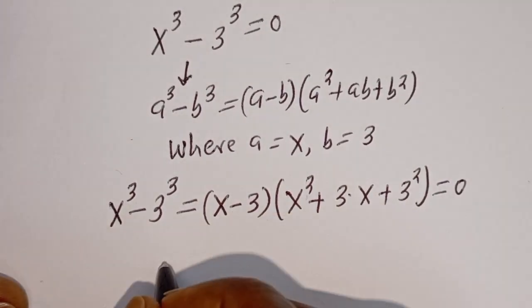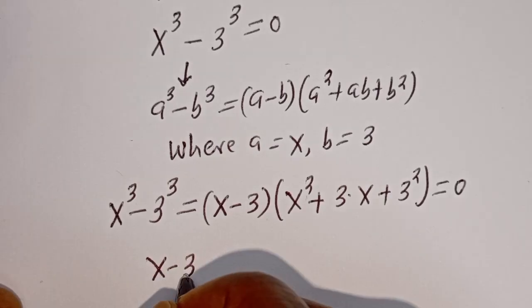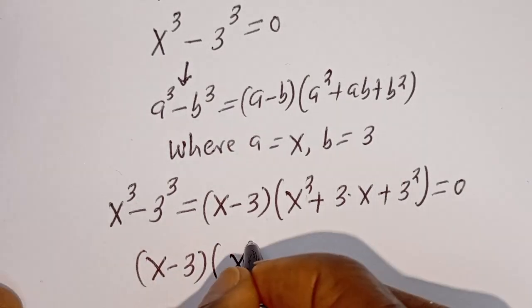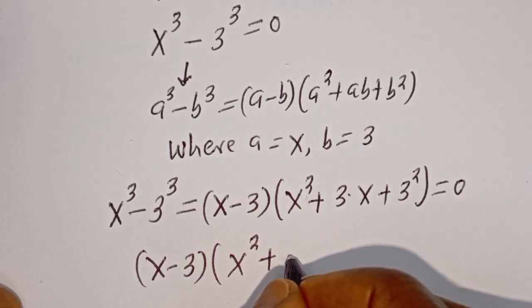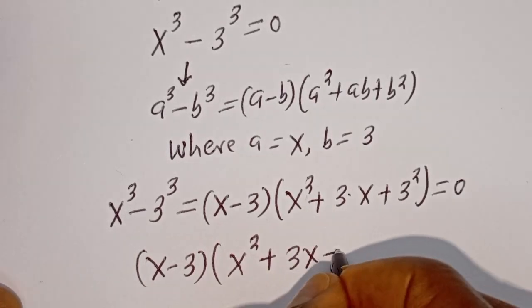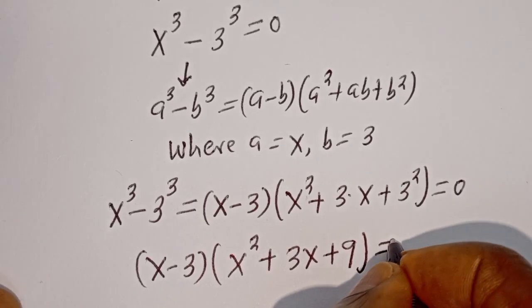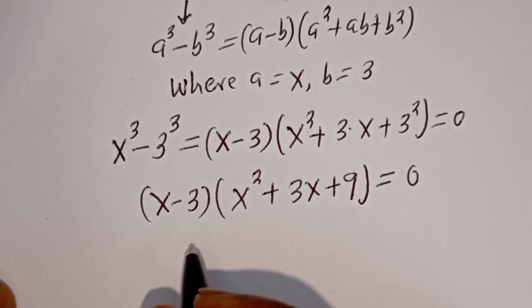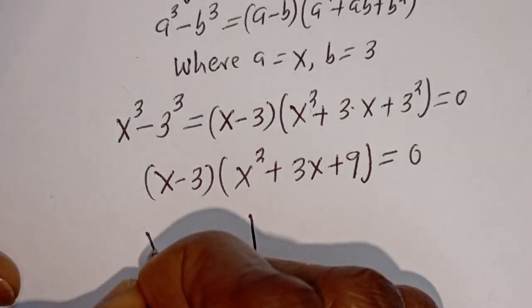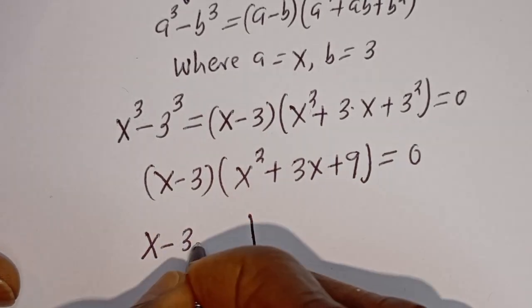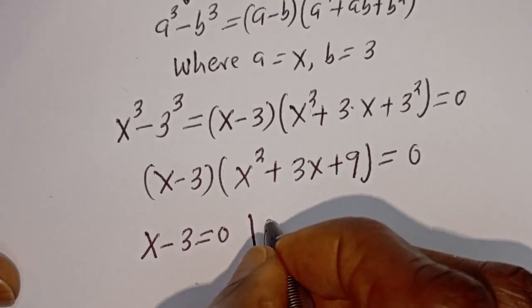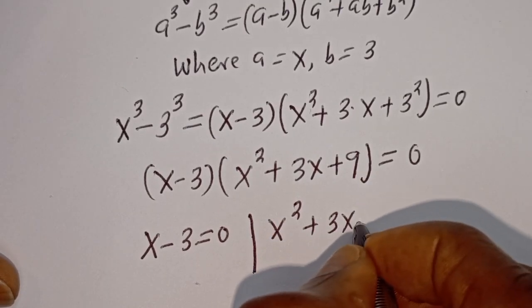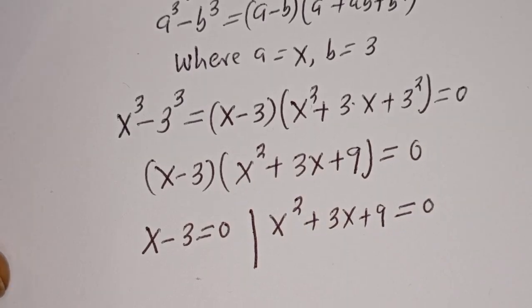Then we have (s minus 3)(s squared plus 3s plus 9) and s minus 3 is equal to 0. There are 2 cases here: the first case is s minus 3 is equal to 0, and the second case is s squared plus 3s plus 9 is equal to 0.